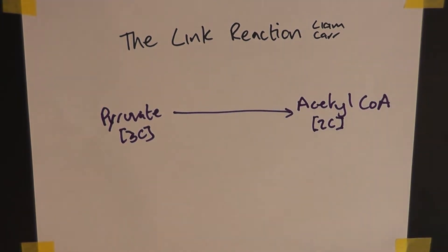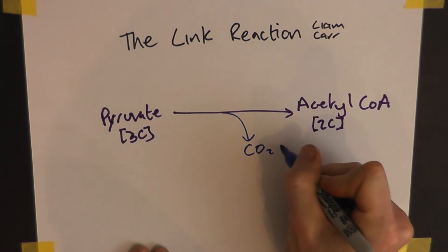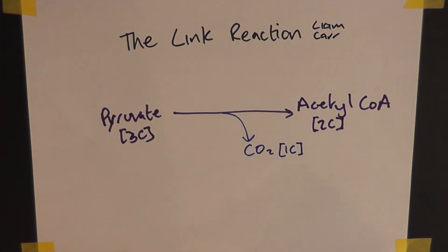And whenever we lose carbon in cellular respiration, we get out CO2, which is a 1-carbon compound. And that's actually one of the reasons why the air that we breathe out, that we exhale, has more carbon dioxide in it than the air we breathe in.